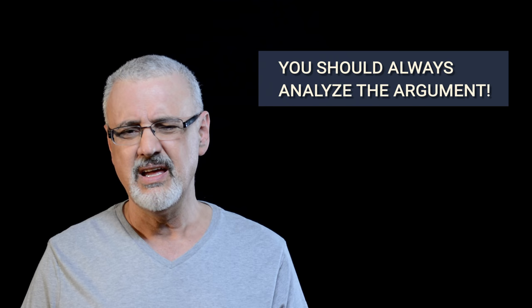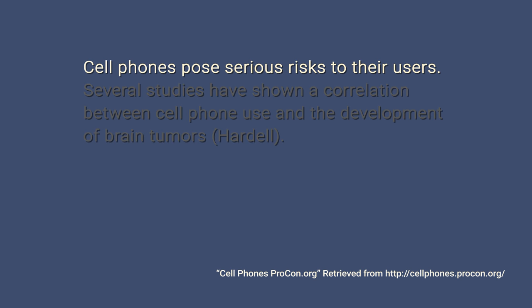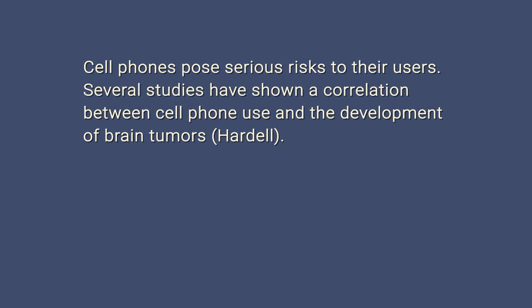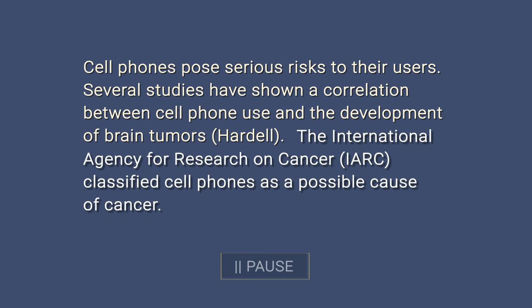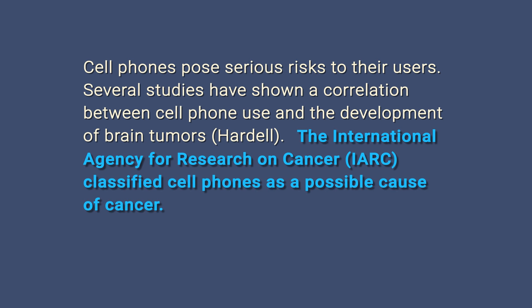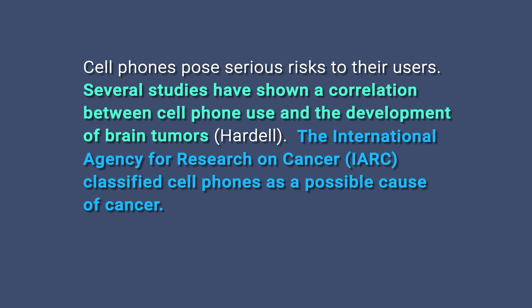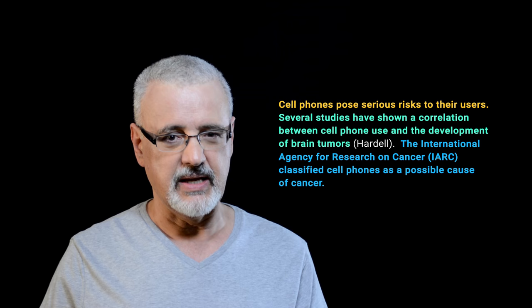Let's look at another example. See if you can identify the claims and which is presented as the conclusion and which are the premises that support that conclusion. Cell phones pose serious risks to their users. Several studies have shown a correlation between cell phone use and the development of brain tumors. The International Agency for Research on Cancer classified cell phones as a possible cause of cancer. Pause the video now if you need time to identify the claims. Premise 1 is here. Premise 2 is here. The main point, or the conclusion, is here. But wait — before you swear never to use a cell phone again, let's analyze the argument.